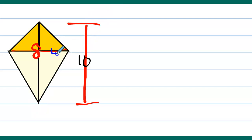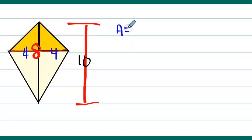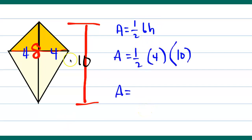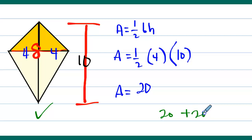Since the full width is eight, this side is four and that side is four. We decompose the kite into two triangles. Using one-half base times height, we substitute the base as four and the height as ten. One-half times four times ten gives us twenty. Since there are two identical triangles, the total area of this kite is twenty plus twenty, which is forty.